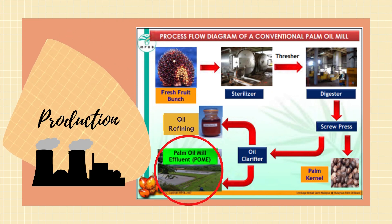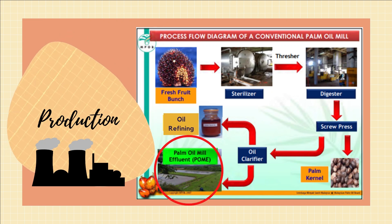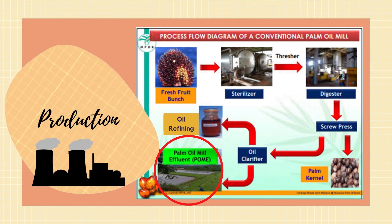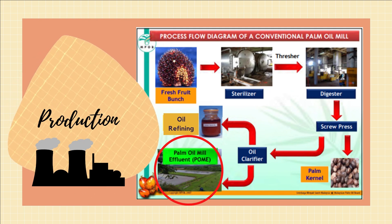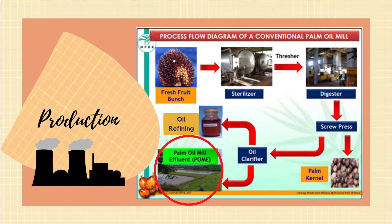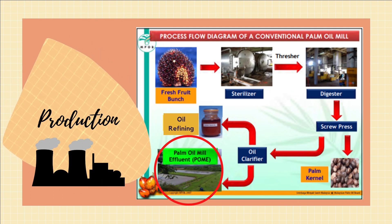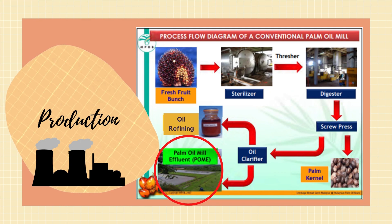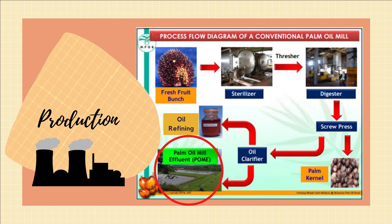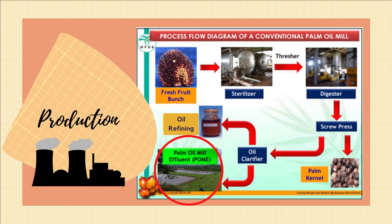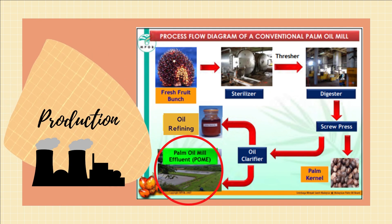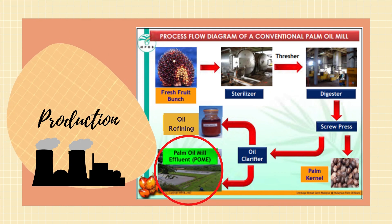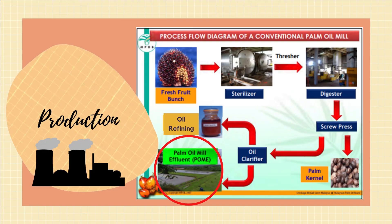The oil clarification process causes palm oil mill effluent (POME), a wastewater generated from palm oil milling activities which requires effective treatment before discharge into water courses due to its highly polluting properties.